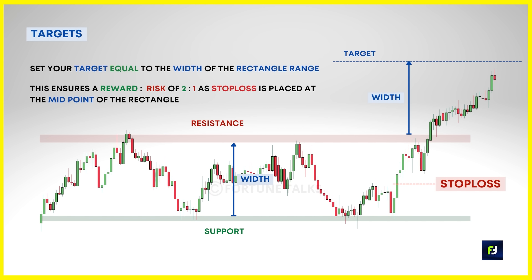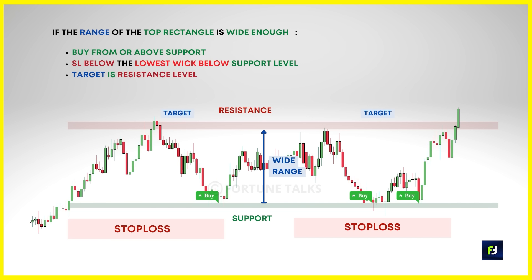For targets when trading rectangle patterns: there's a clearly stated rule — remain in the trade for a minimum price move equal to the size or width of the pattern. Place the distance between support and resistance on the chart beginning from the breakout moment. Since the stop loss is at the midpoint, the target is twice the stop loss size — enabling a reward-to-risk of two-to-one from the offset. You can also use the trailing stop loss method to ride the trend until exhausted. Another way traders can successfully trade rectangles is by buying at support and selling at resistance levels if the width of the rectangle pattern is very high.